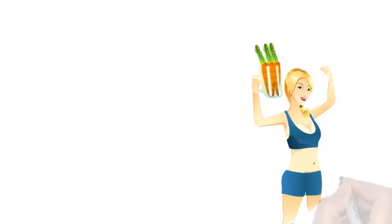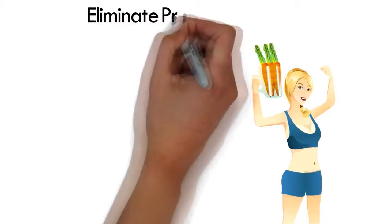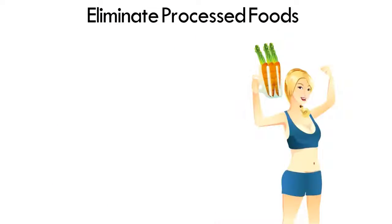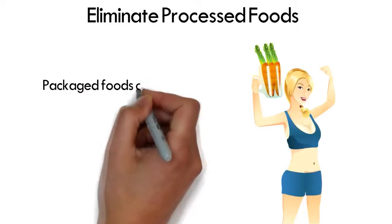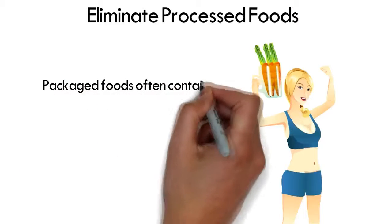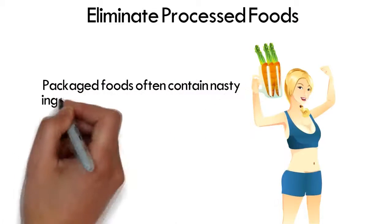Eliminate processed foods. Packaged foods often contain nasty ingredients and have zero nutritional benefit. Foods like granola bars, deli meats, and crackers have high amounts of sugar and sodium. Limit these foods in your diet for fastest weight loss and overall health.